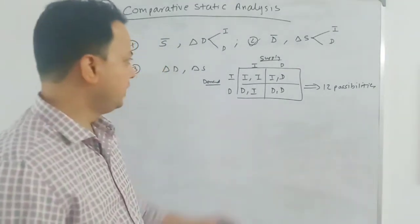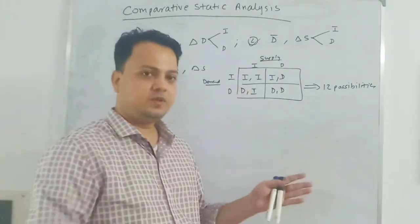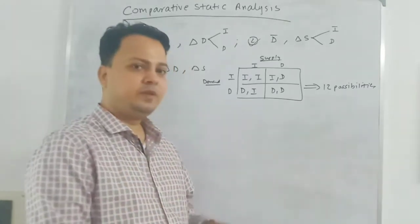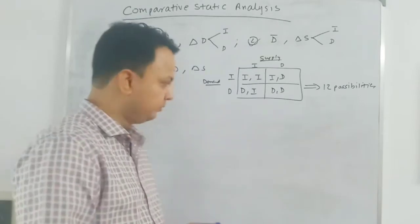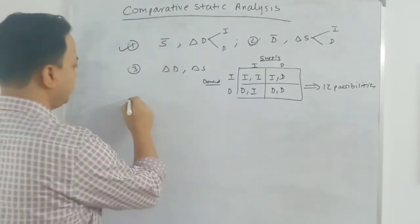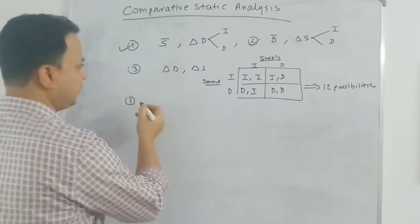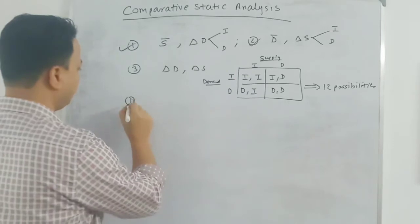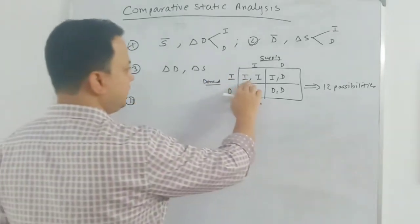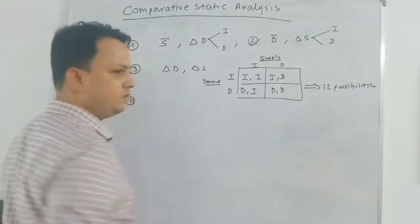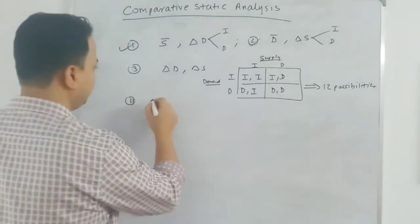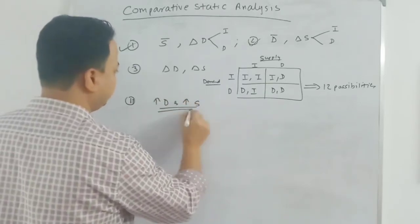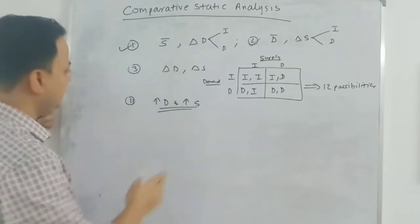We will start from the initial equilibrium and shift both the demand curve rightward and the supply curve rightward. Depending upon the magnitude of the shift we will get different possibilities — three in total. Let me draw all three possibilities in one graph. I label the sub-cases 1.1, 1.2, and 1.3.